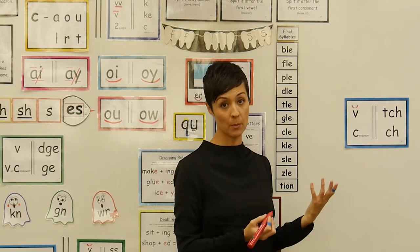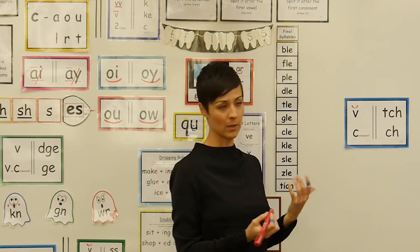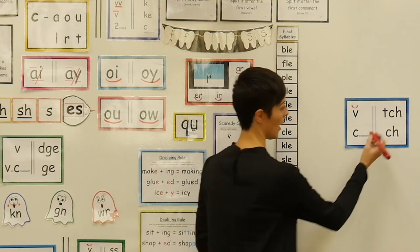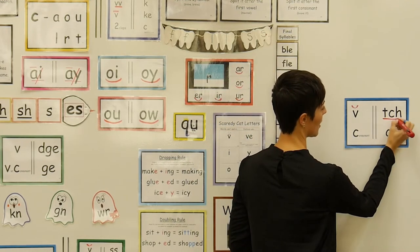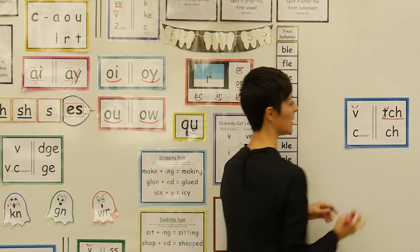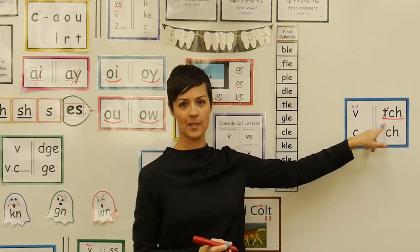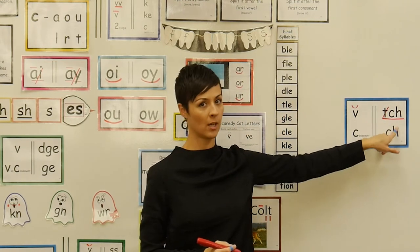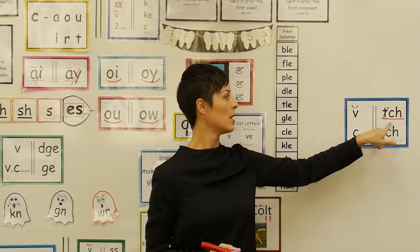To help them remember this, all we have to do is code it and post it. Underline the trigraph, cross out the t, because of course we're not going to say tch — it's just ch.